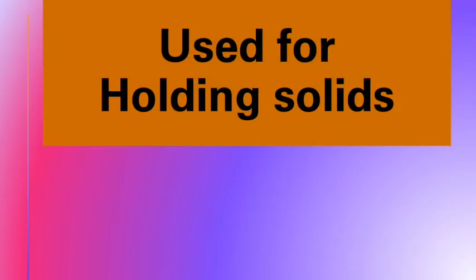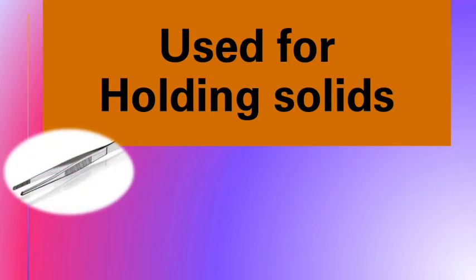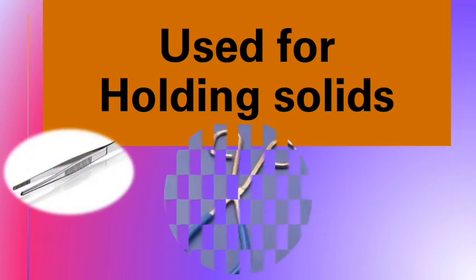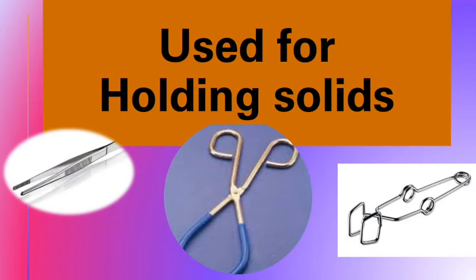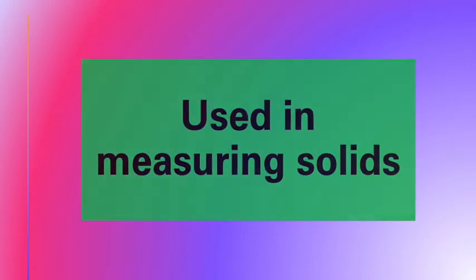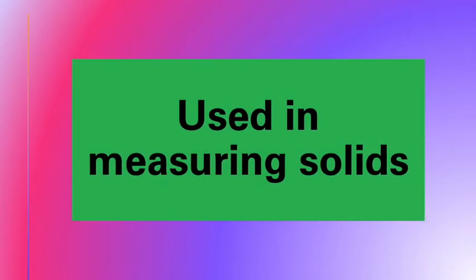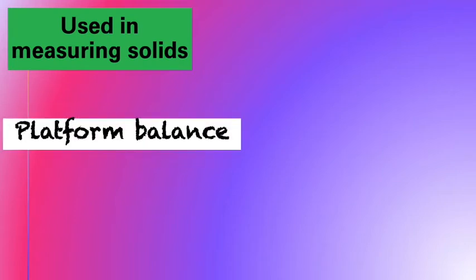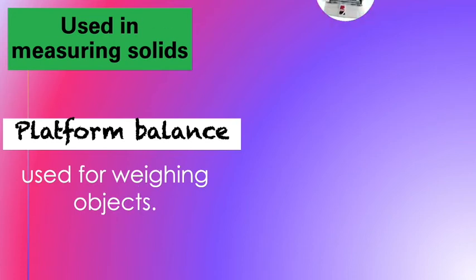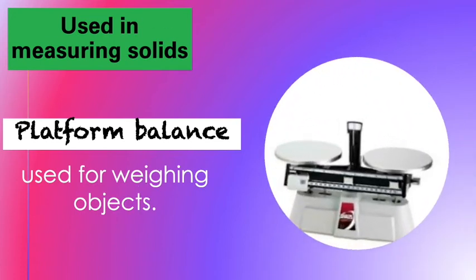Again, the laboratory tools used for holding solids are forceps and a test tube holder. Next category is used in measuring solids. The first one is the platform balance. It is used for weighing objects. Here's a picture of a platform balance.